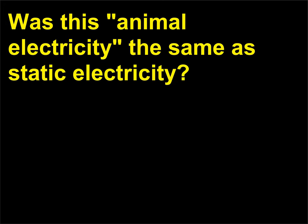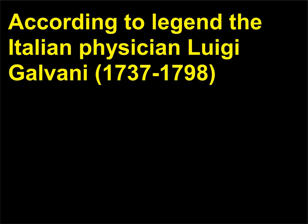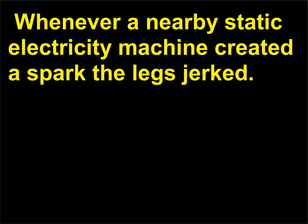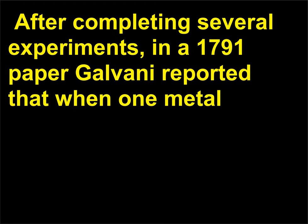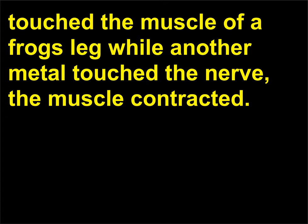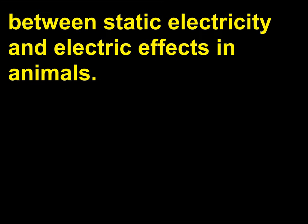Was this animal electricity the same as static electricity? According to legend the Italian physician Luigi Galvani (1737-1798) was making frog leg soup for his sick wife. Whenever a nearby static electricity machine created a spark the legs jerked. After completing several experiments, in a 1791 paper Galvani reported that when one metal touched the muscle of a frog's leg while another metal touched the nerve, the muscle contracted. Thus Galvani helped to show that there was a connection between static electricity and electric effects in animals.